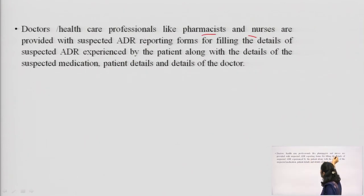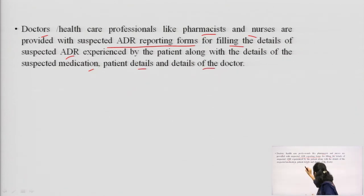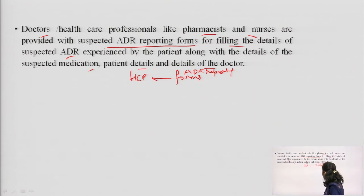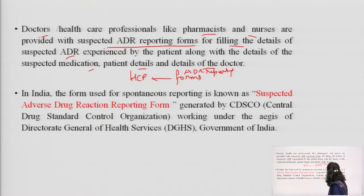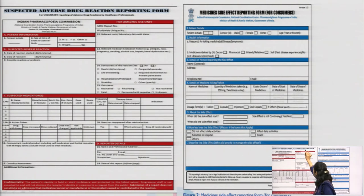Doctors, healthcare professionals like pharmacists and nurses are provided with suspected ADR reporting forms. These forms capture details of suspected ADRs experienced by the patient, along with details of the suspected medication, patient details, and details of the doctor. Healthcare professionals can also download reporting forms from the IPC website. In India, the form used for spontaneous reporting is known as the Suspected ADR Reporting Form, which is a red form generated by CDSCO, working under the aegis of the Director General of Health Services, Government of India.